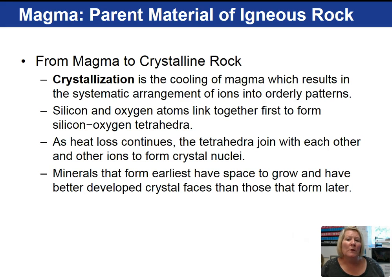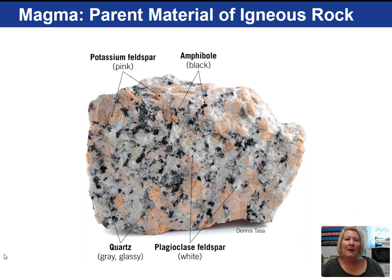The earliest forming minerals have space to grow and tend to be better developed with crystal faces than minerals that crystallize later. This magma cooled, producing the igneous rock granite, which consists of potassium feldspar, amphibole, plagioclase feldspar, and quartz.